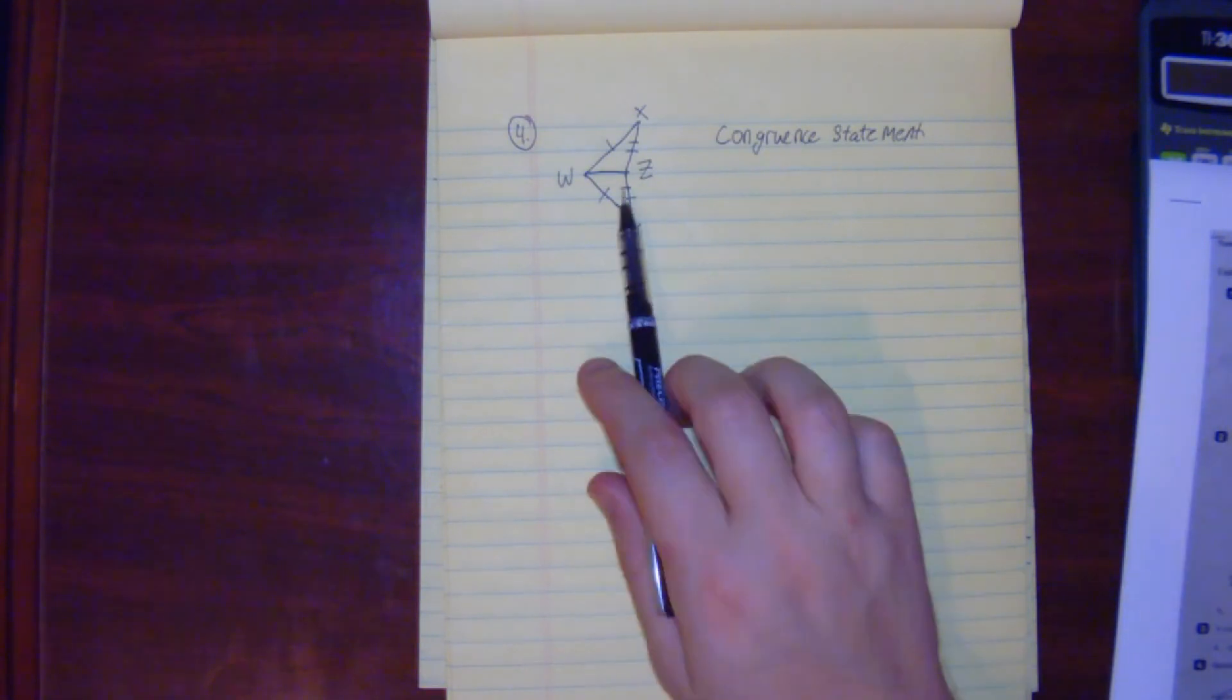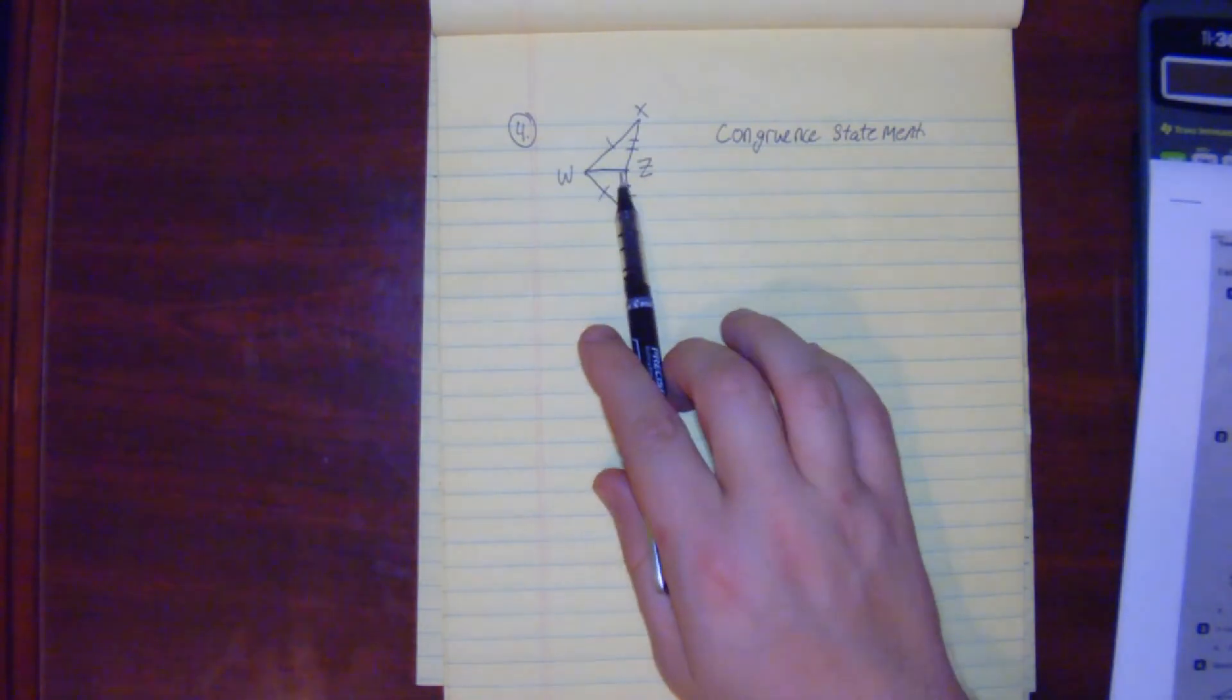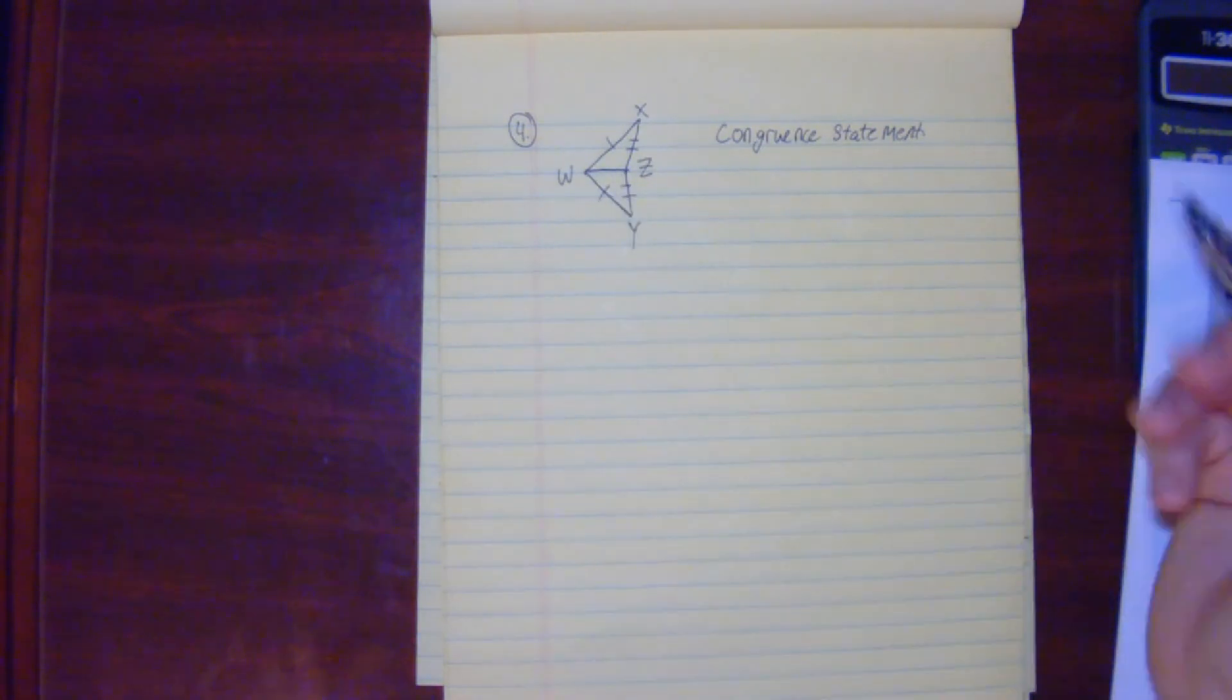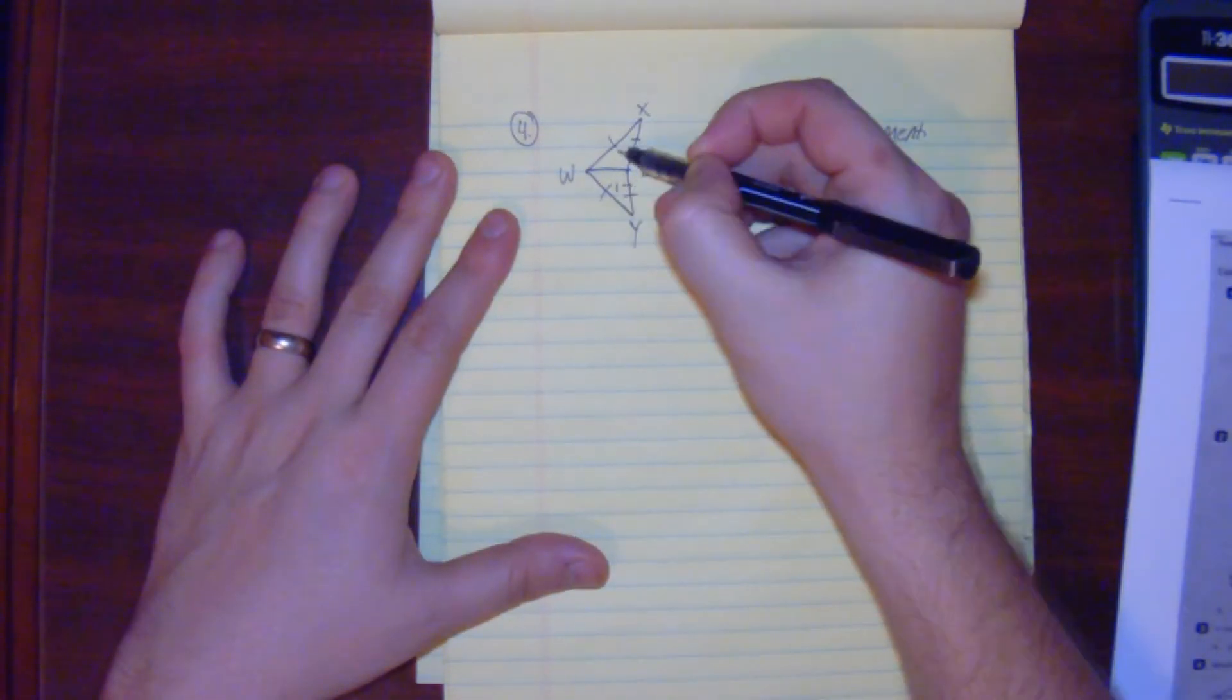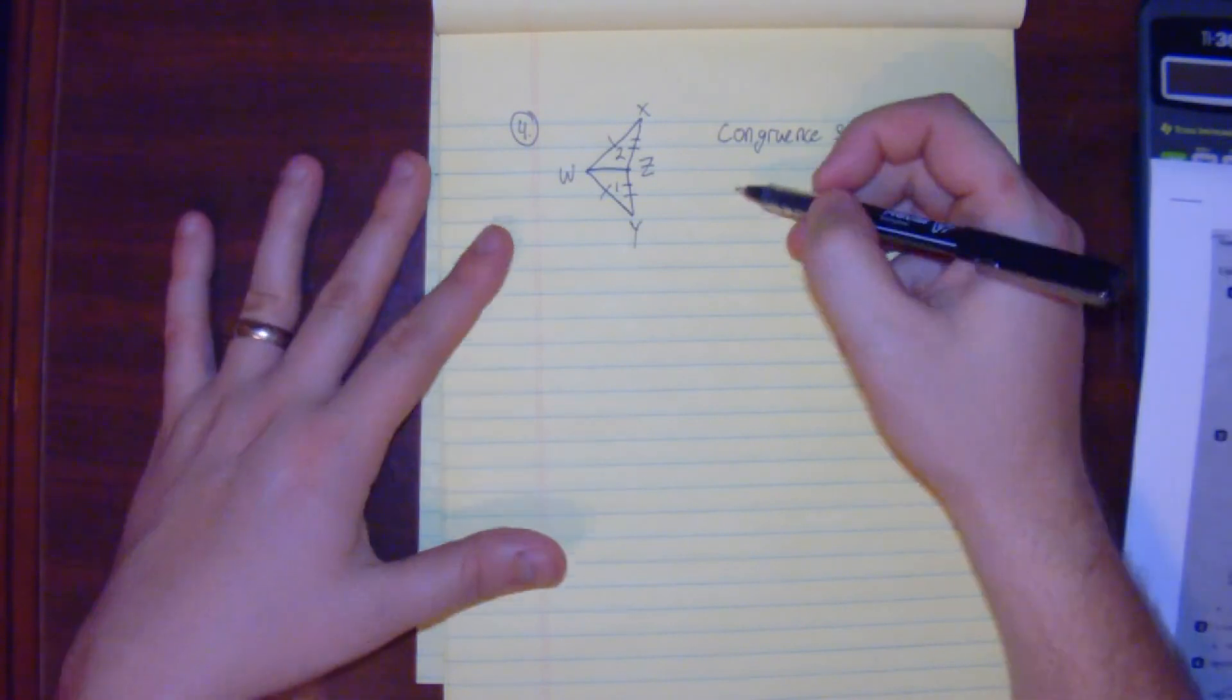We have two triangles. We have two out of the three markings - we don't need to show the third one because W and Z are shared. So our first triangle would be this, that would be our second. I would just go in the order in which it's given.